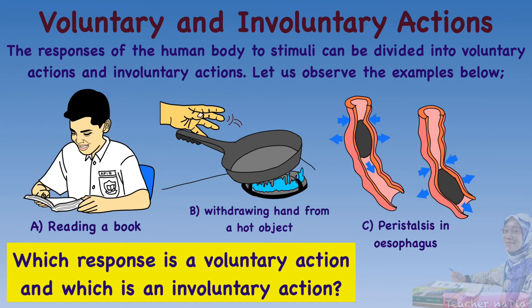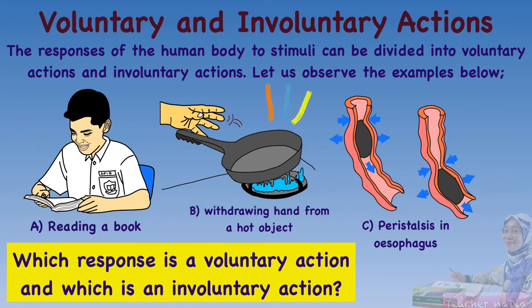The responses of the human body to stimuli can be divided into voluntary actions and involuntary actions. Examples include a boy reading a book, a process of withdrawing a hand from a hot object, and the process of peristalsis in the esophagus. Which response is a voluntary action and which is an involuntary action?